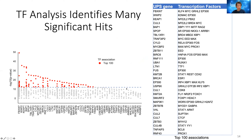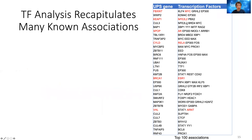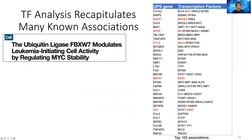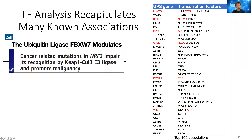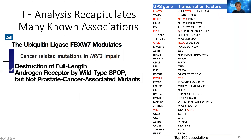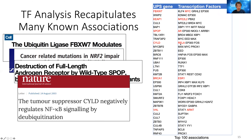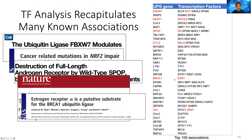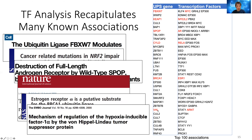After multiple hypothesis testing, these are the significant results. Looking at the top predicted pairs of UPS and predicted substrate, many are previously characterized. For example, FBXW7 is known to degrade MYC protein, KEAP1 is known to degrade NFE2L2, SPOP is known to degrade AR, CYLD is known to degrade RalA which is in the NFkB pathway, BRCA1 is known to degrade estrogen receptor, and VHL is known to degrade HIF protein. We're able to actually see many of these known pairs.